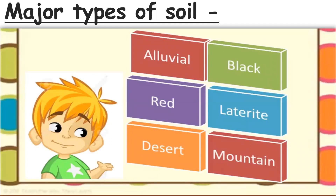India has six major types of soil. They are alluvial soil, black soil, red soil, laterite soil, desert soil, and mountain soil. Let us learn about these in detail.